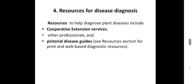Next, resources for disease diagnosis. There are various resources which help to diagnose plant diseases. The first is cooperative extension services — that means agriculture assistants and agriculture officers. Then other professionals, such as agri-clinics. Then pictorial disease guides, resource sections, or web-based diagnostic resources. The profiles or websites of renowned institutes or research universities may contain disease pictures, from which you can compare and decide which disease is present in your plant sample.